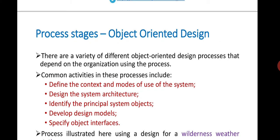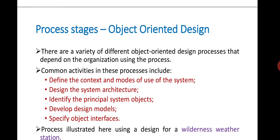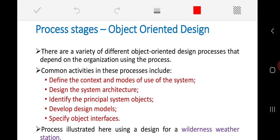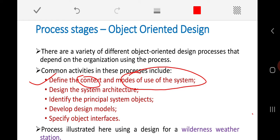The common activities in this process include those five stages. The very first one is to define the context and modes of use of the system. It consists of two important parts: defining the context and defining the modes of use of the system. In this first stage, whatever software system we are going to design, we need to define the context for it.